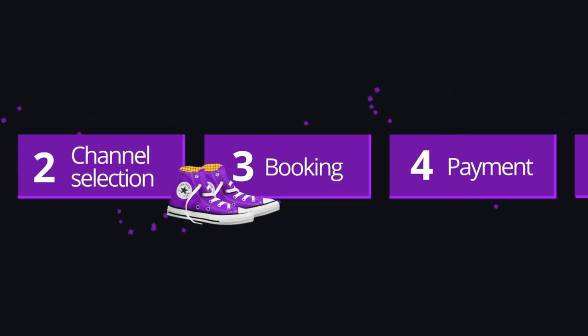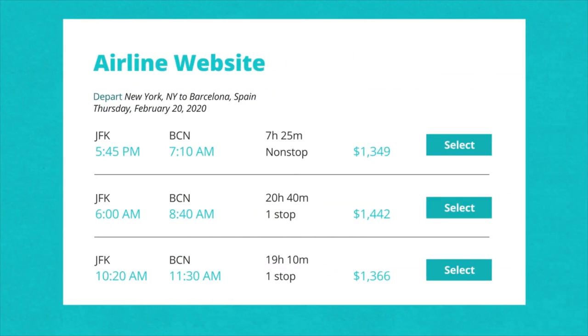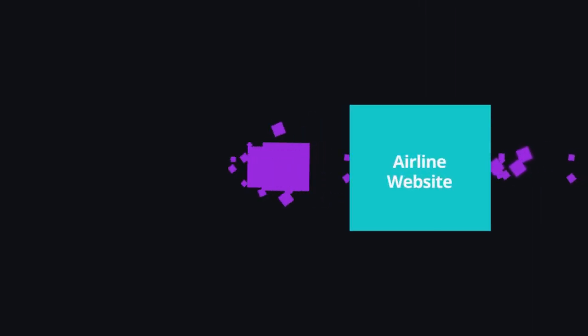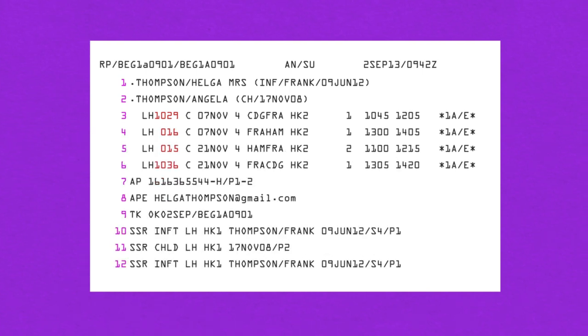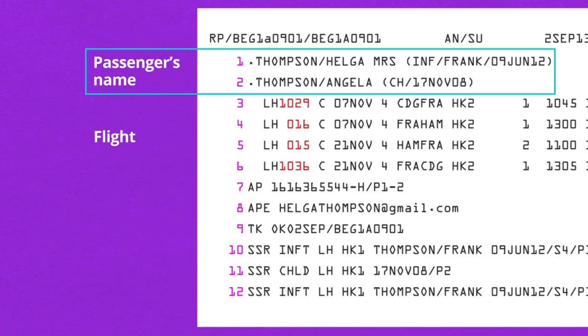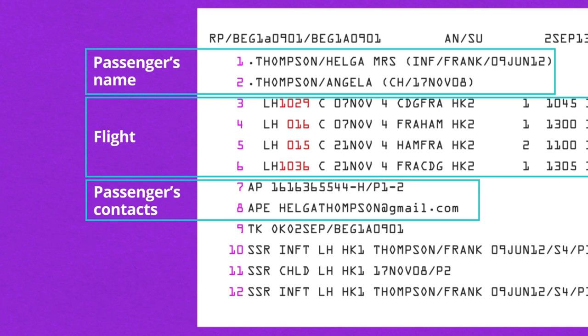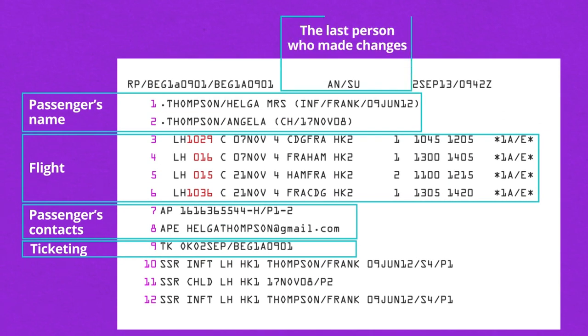Step 3: Booking a Flight and Generating a PNR. While booking a flight, the website collects personal data to create a PNR — Passenger Name Record. Depending on the carrier, the record can contain up to 999 elements, but only five are mandatory: passenger's name, flight itinerary, passenger's contact info (phone and email), ticketing (the date the ticket will be issued), and the 'received from' element — the last person who made changes in the PNR.